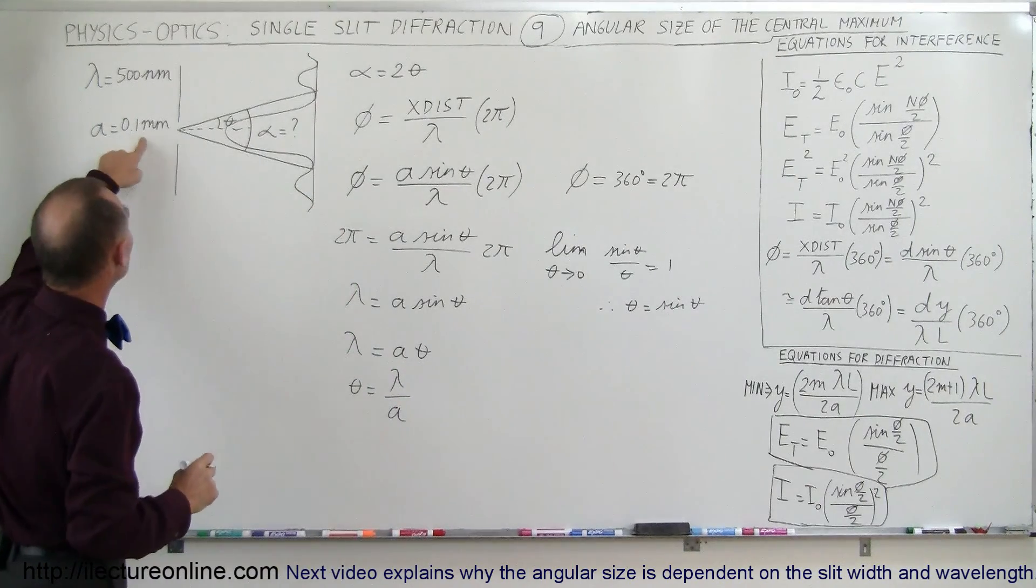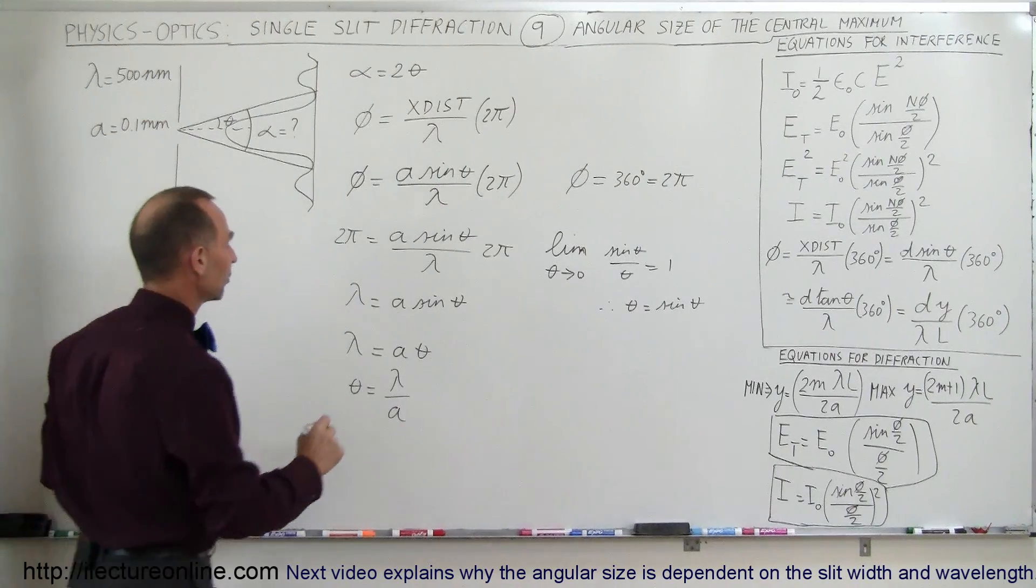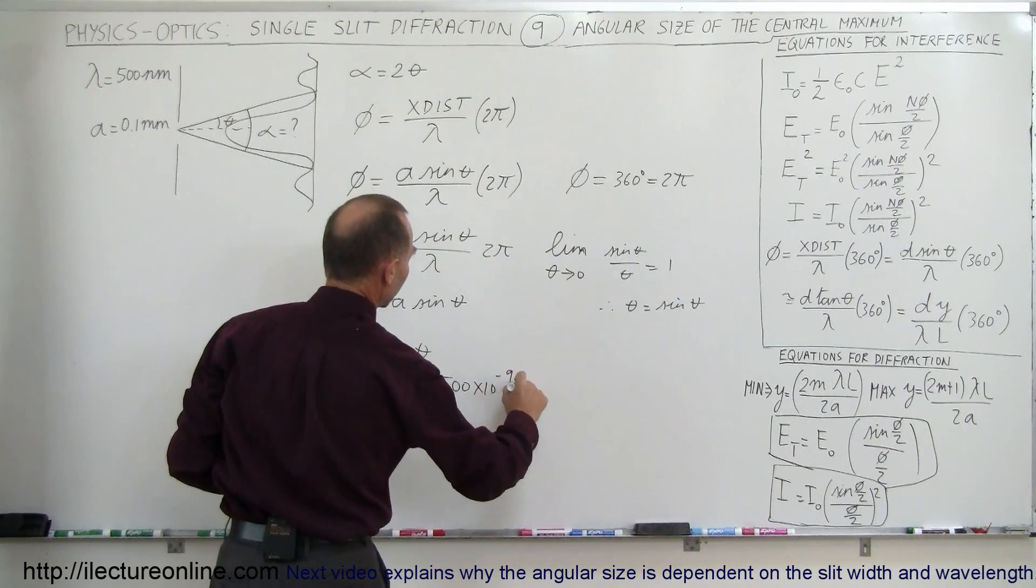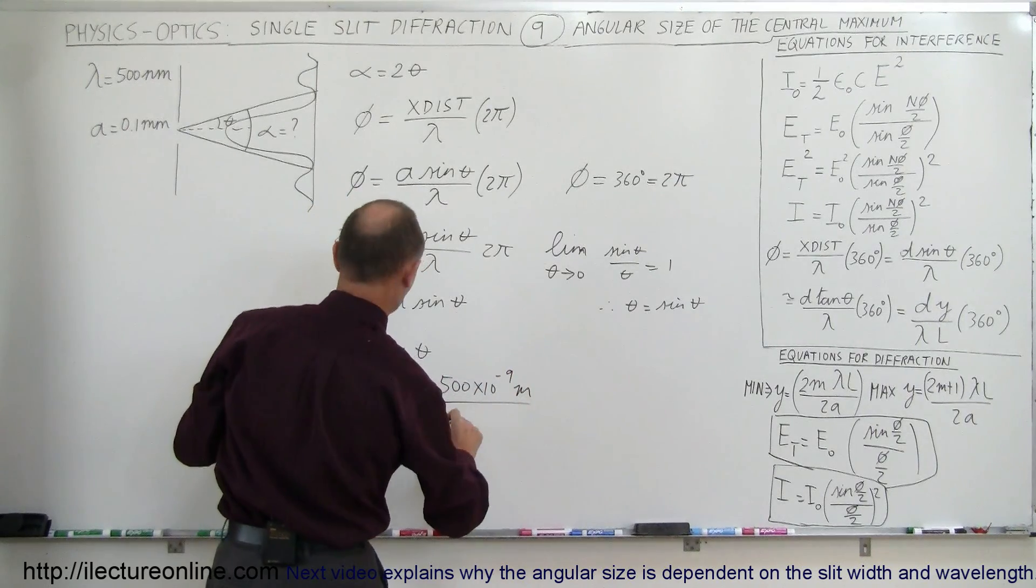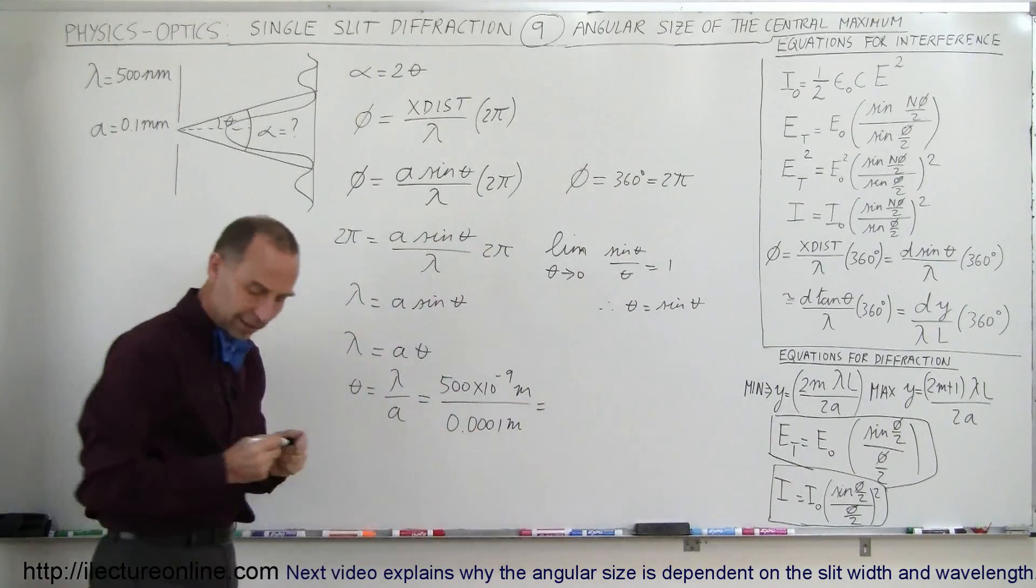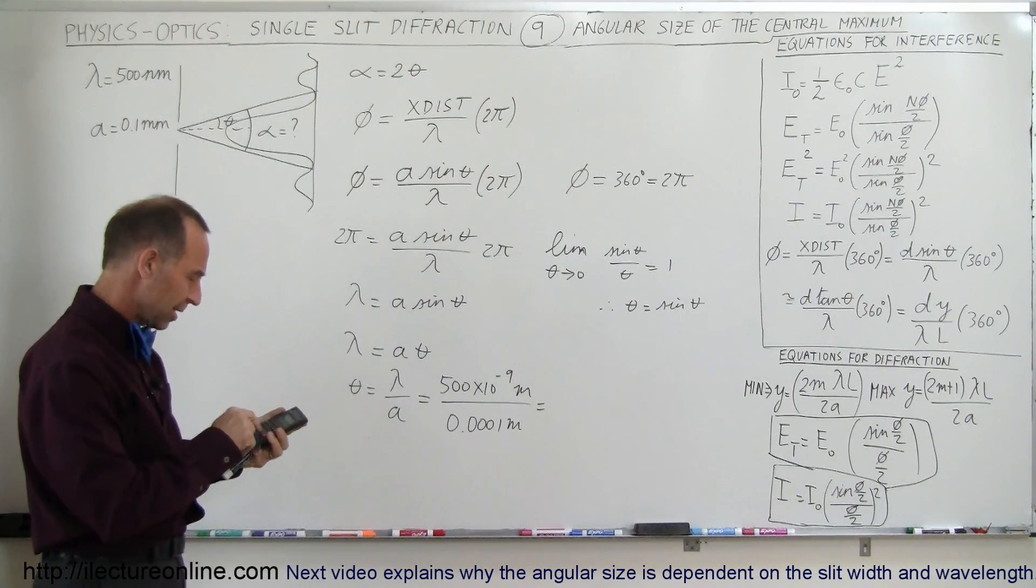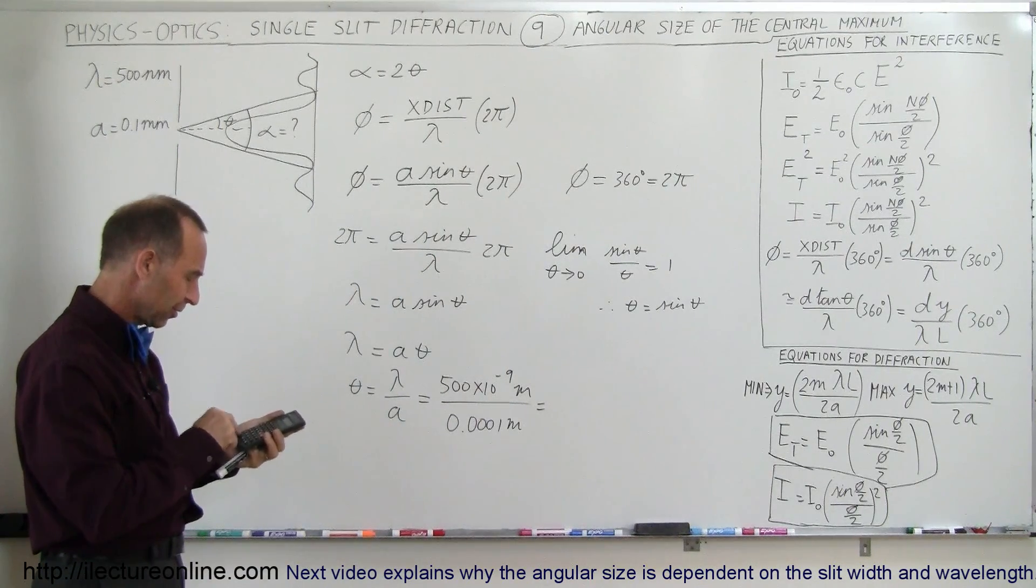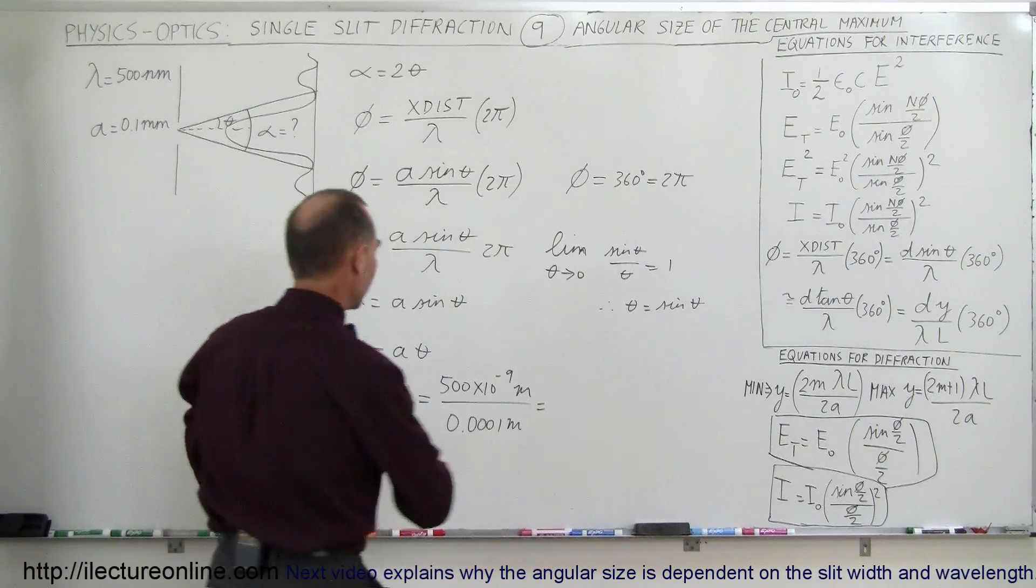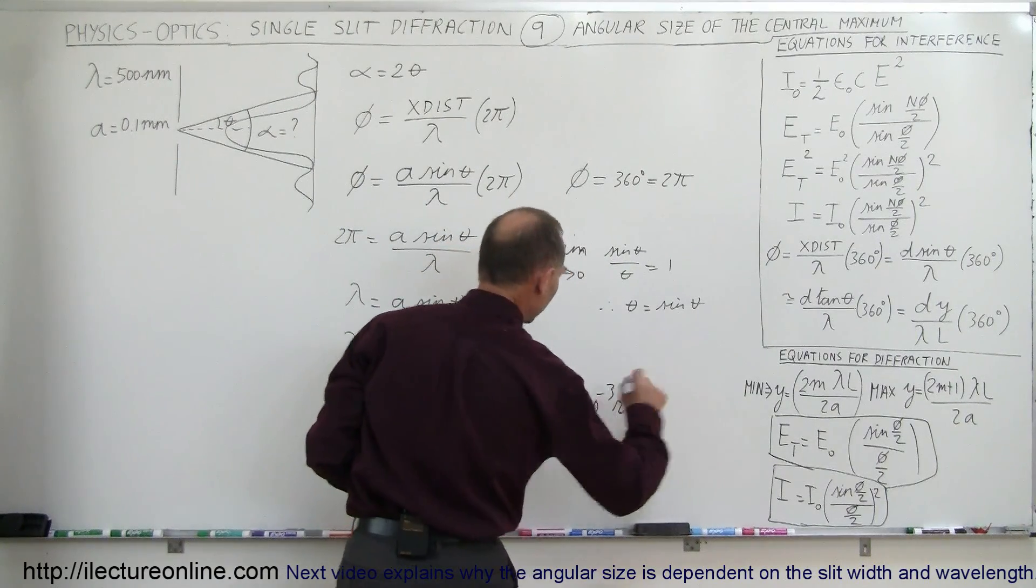Okay, here we have the slit width is 0.1 millimeters, and lambda is 500 nanometers. So when we plug those numbers in, we get 500 times 10 to the minus 9 meters divided by 0.0001 meter, which is a tenth of a millimeter. So 500 e to the minus 9 divided by 0.0001 equals 5 times 10 to the minus 3, that would be in radians of course.